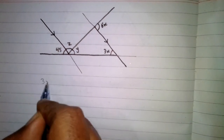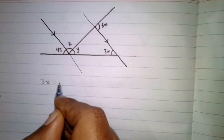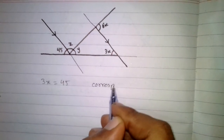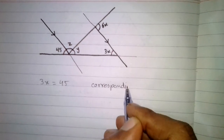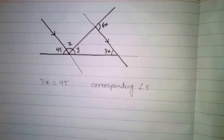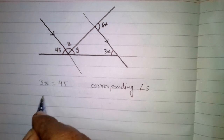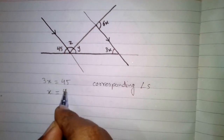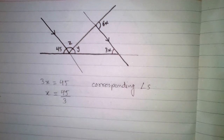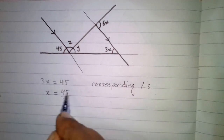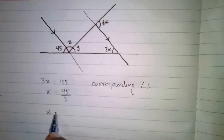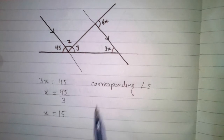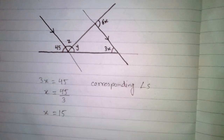These corresponding angles are equal, so 3x is equal to 45. We can find the value of X by dividing both sides by 3, giving us X is equal to 45 divided by 3, so X is equal to 15.